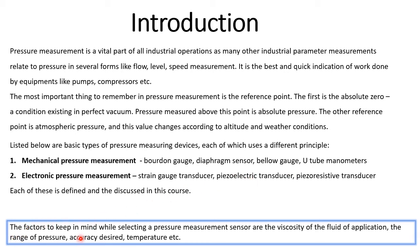The factors to keep in mind when selecting a pressure sensor for a process application include: the viscosity of the fluid, which is very important as it may influence device selection; the range of pressure; the accuracy desired, since more accurate instruments also have a higher cost; and the temperature of the environment and the fluid.